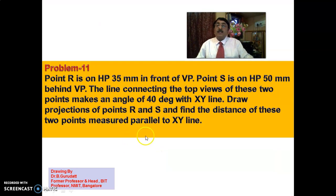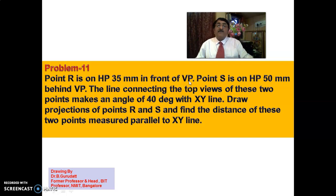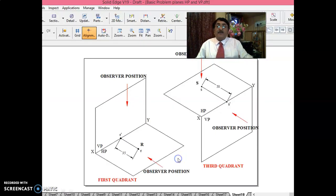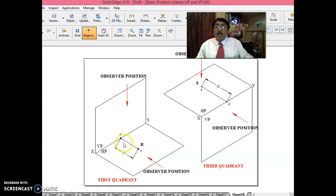Now problem 11 — a little tricky. Point R is on HP, 35mm in front of VP. Since point R is on HP only, when you look from the front, the front view R-dash will appear on the XY line only. The top view R will be 35mm away from XY line.